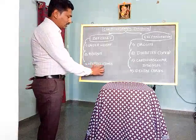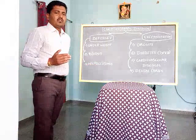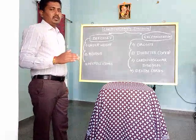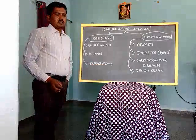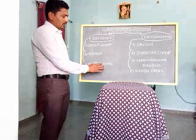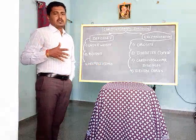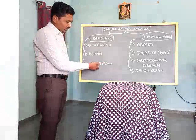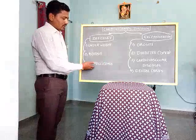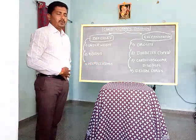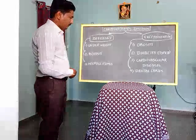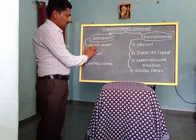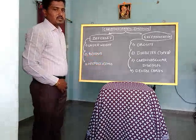The normal fasting blood glucose level is 70 to 110 mg/dL. Less than 70 will be called hypoglycemia. The person may have symptoms of severe sweating, weakness, tremors, and loss of consciousness. Hypoglycemia is also seen in diabetic patients who are receiving excessive insulin dosage.